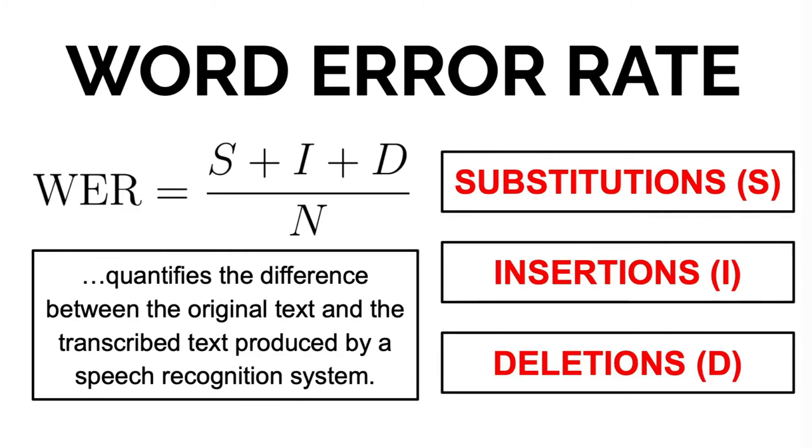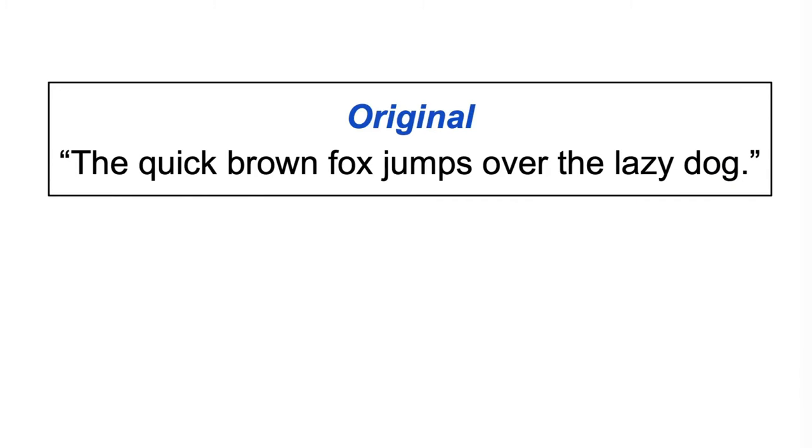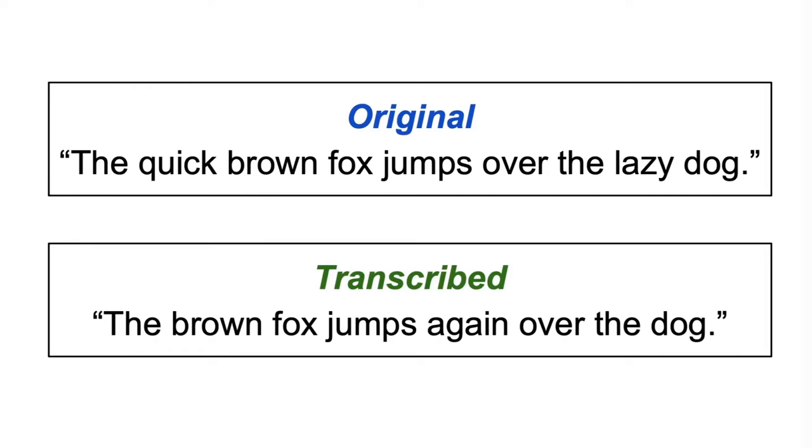And to better understand how the word error rate works, let's consider a brief example where we have the following original sentence: the quick brown fox jumps over the lazy dog, and let's say that a speech recognition system transcribed this as the brown fox jumps again over the dog.